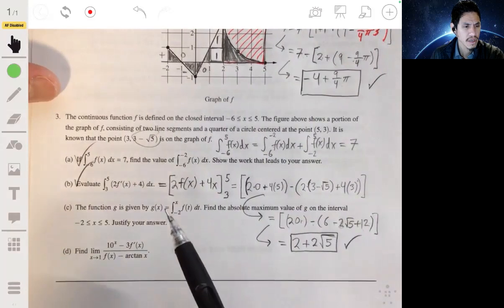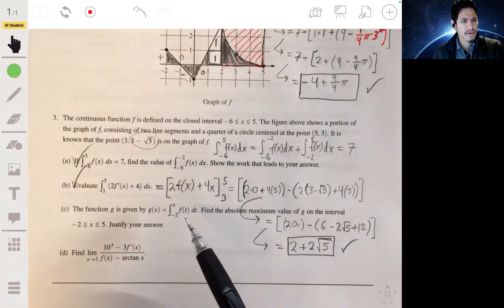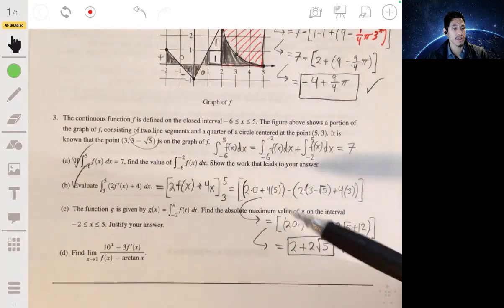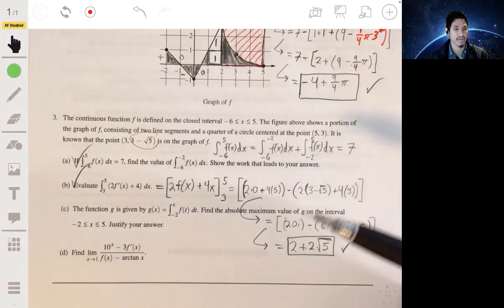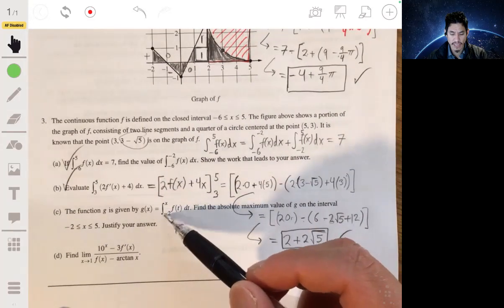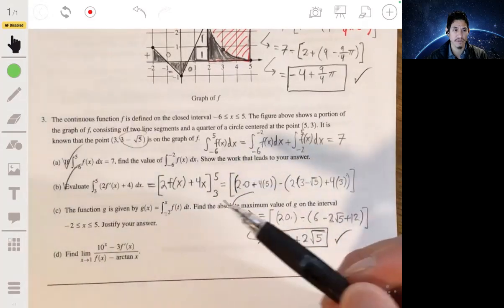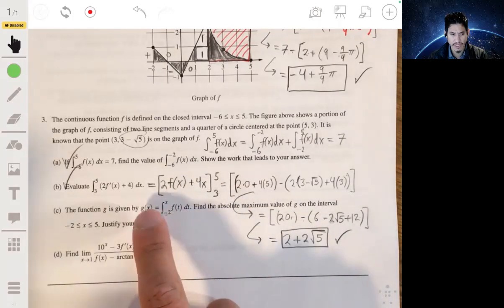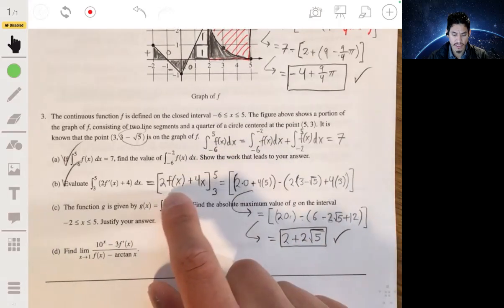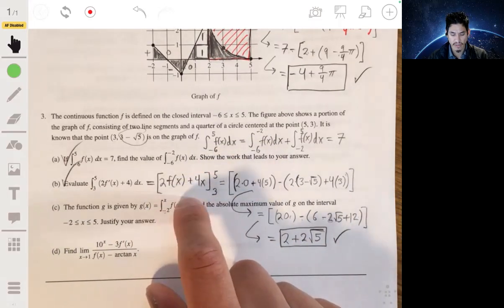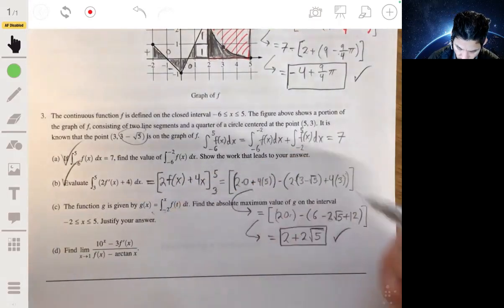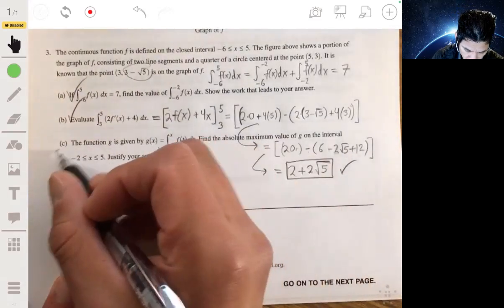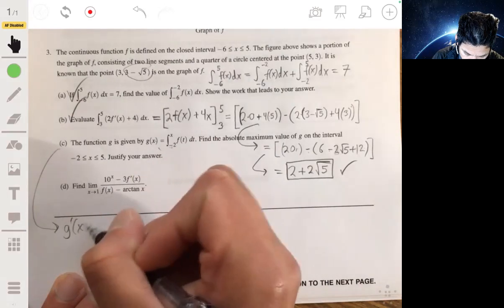In part C, the function g is given by g(x) equals the integral from negative 2 to x of f(t)dt. Find the absolute maximum of g on the interval from negative 2 to 5. Justify your answer. Okay, so first, recognize that this involves the fundamental theorem of calculus part 2, where if you find the derivative of g, this undoes the integral, and this will just be f(x). So let's see, let's do part C down here. So g'(x) is simply equal to f(x).